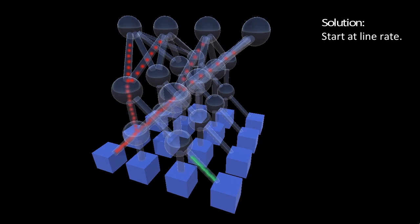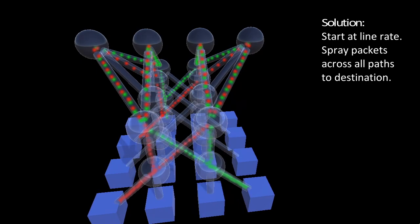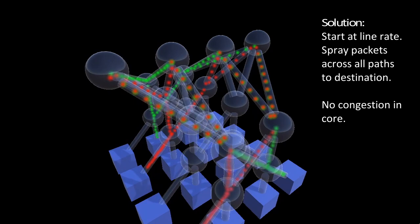What can you do? If every sender sprays packets equally across all paths to the destination, you don't get flow collisions, and you can use the full capacity of the network core. Downside is you get a ton of reordering, which makes life hard for transport protocols.